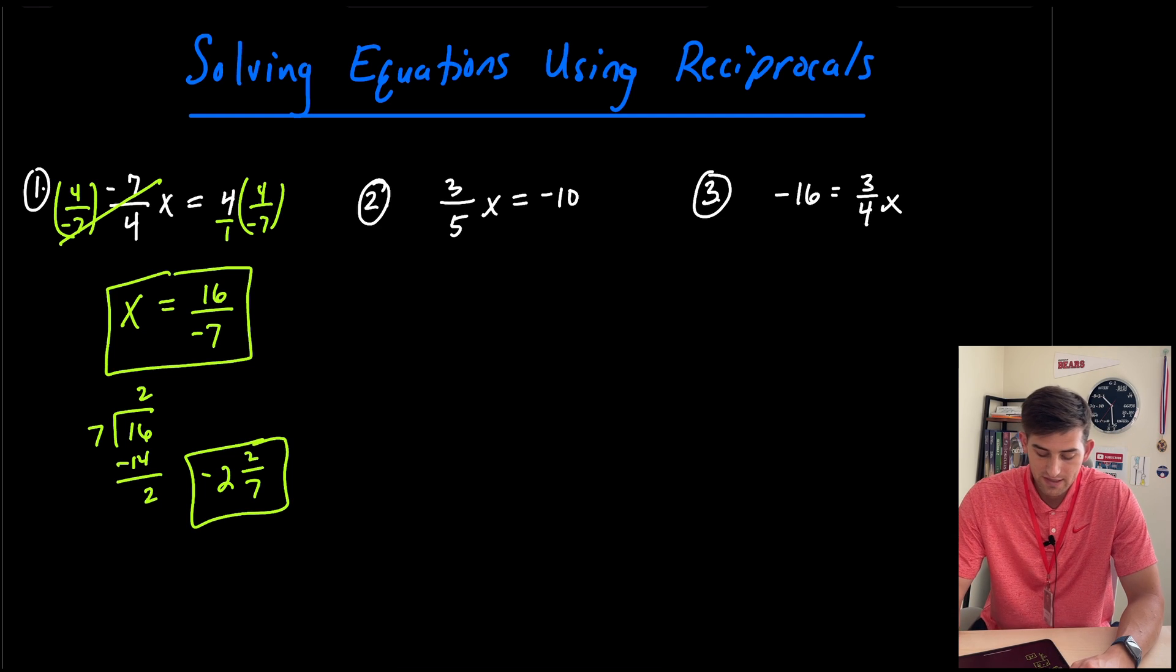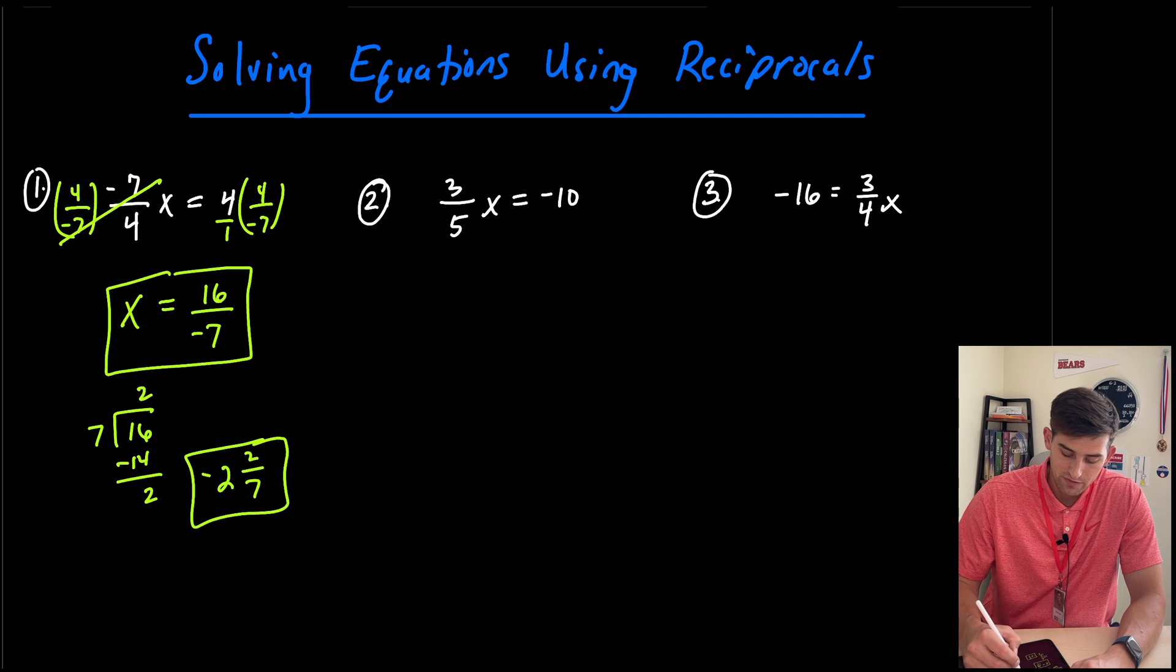All right, number two. Three fifths x equals negative 10. So like we looked at on number one, we can go ahead and multiply by the reciprocal of our coefficient, which would be five over three.